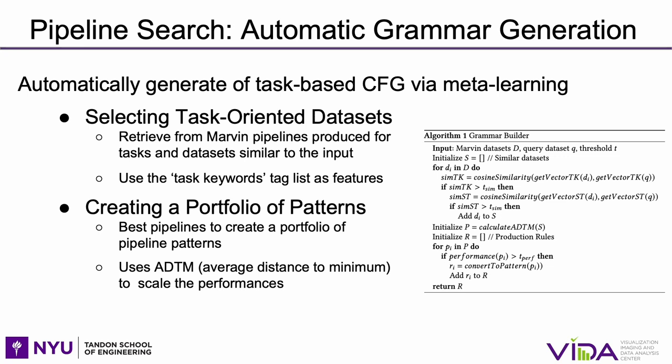We use the task keyword tag list provided in the problem definition as features that describe the problem or task to be solved, and search in Marvin for pipelines that contain a similar set of keywords. After selecting similar datasets, the next step is to take the best pipelines to create a portfolio of pipeline patterns. To scale the performance measures, AlphaD3M uses a strategy based on the average distance to the minimum, which transforms performance to the distance to the best observed performance, scaled between 0 and 1.